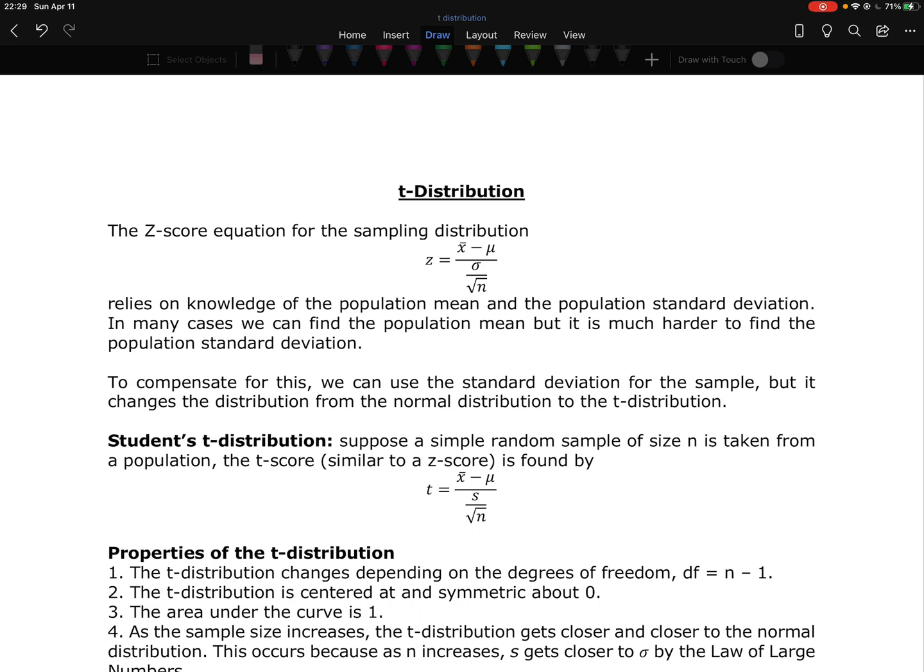So to compensate for this, we can use the standard deviation from our sample, but it's going to change the distribution. It's no longer going to be considered a normal distribution. It's going to turn it into a t-distribution. Now, a t-distribution is very similar to a z-distribution or a normal distribution.